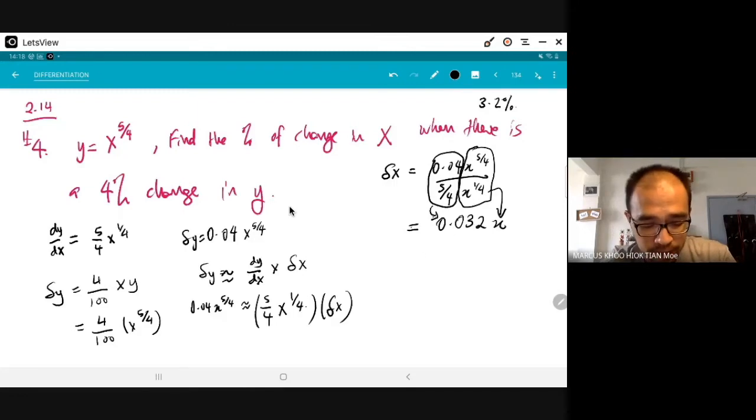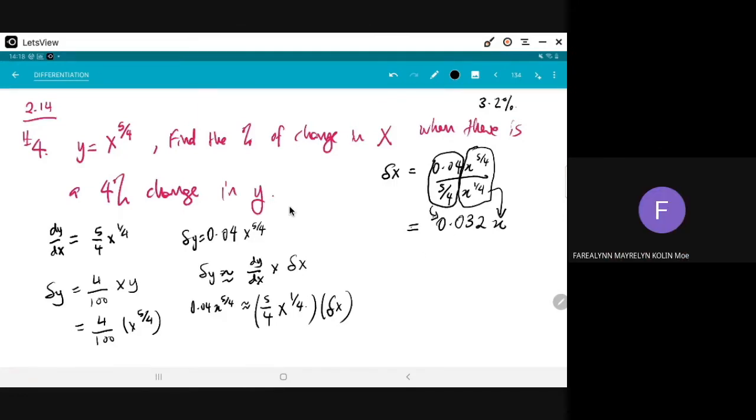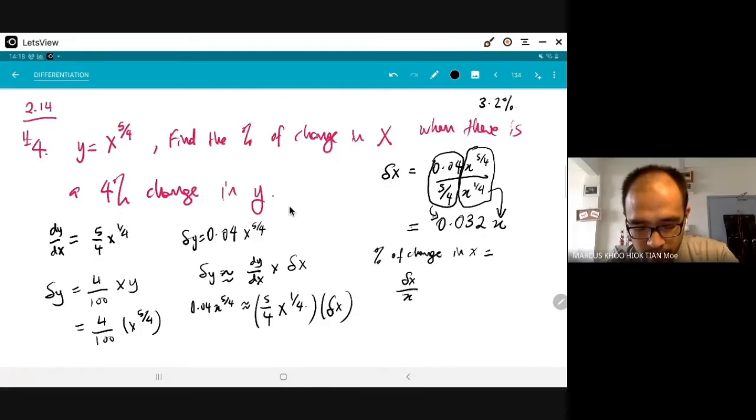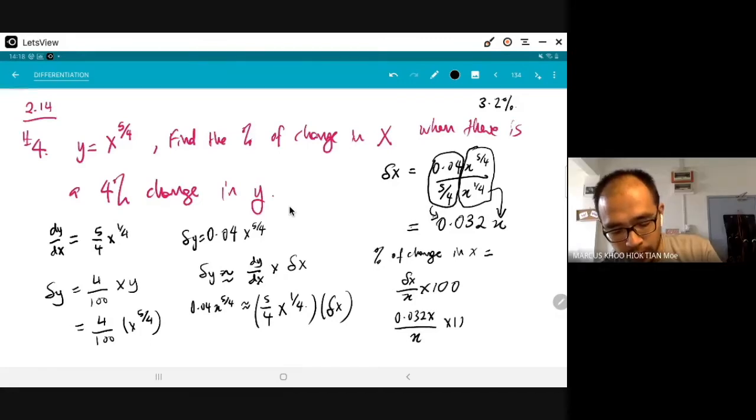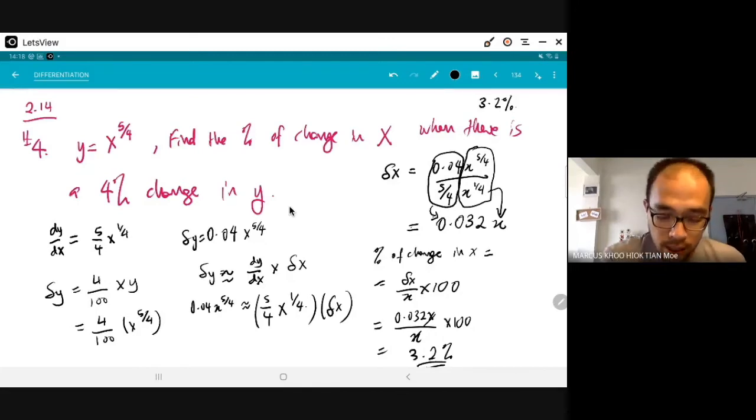Okay. And then, the percentage of change in x equal to delta x over x times 100%. Delta x over x times 100%. And then? Then, substitute the delta x. Okay. So, cancel out, get 3.2%. Okay. All right. Yeah. That's actually a good way of solving this.